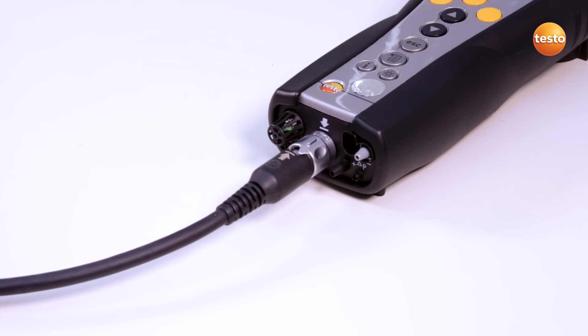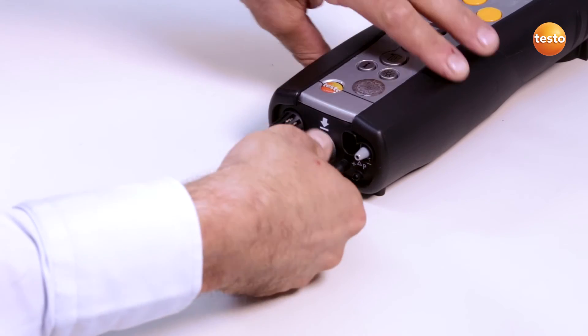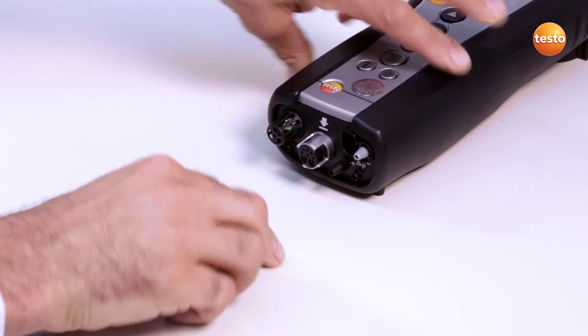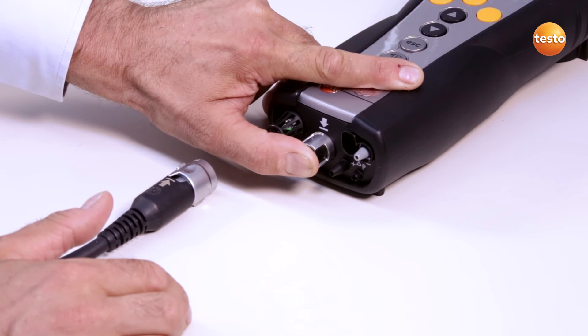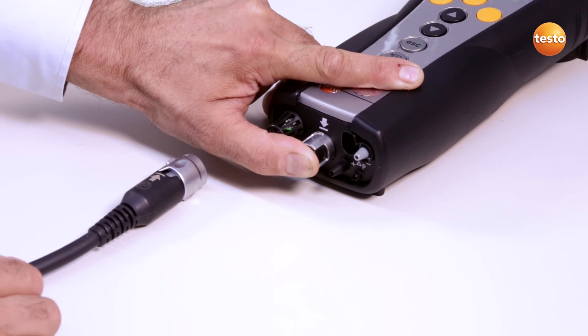If there is a leak, you can seal the gas inlet using your thumb and carry out the gas path check again. This enables you to check whether the cause is the gas sampling probe or the Testo 340.